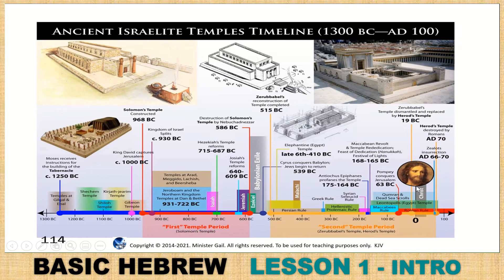The ancient Israelite temple's timeline — you can read and study this later. You have Solomon's temple, Zerubbabel's temple, the tabernacle plan, and this gives you the timeline of when things were created and made. It helps you see through history, and in 70 AD the last temple was destroyed by the Romans — the Roman Catholics destroyed the Jewish temple.